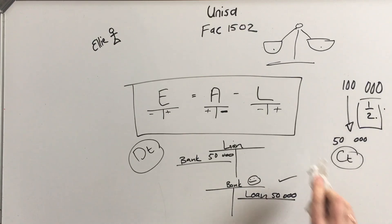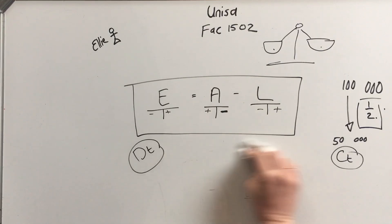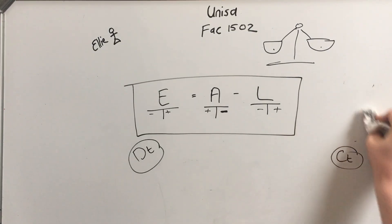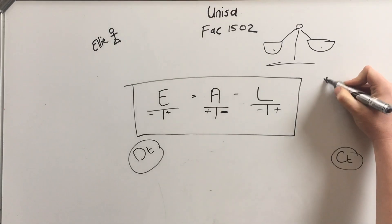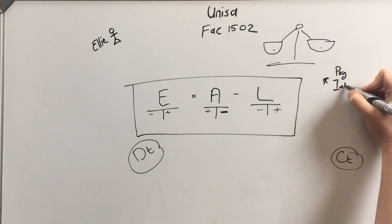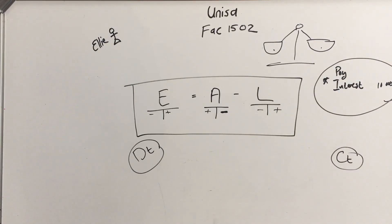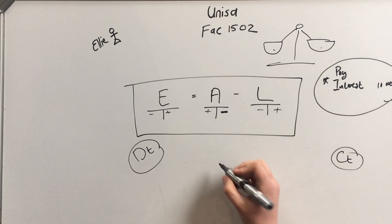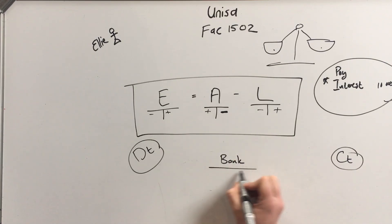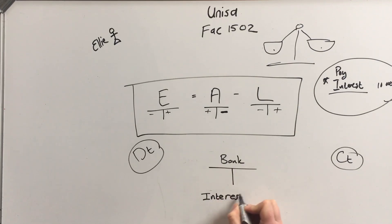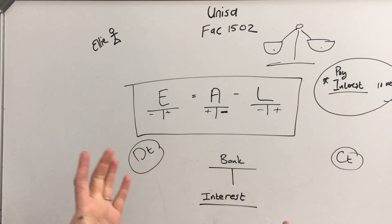That's liabilities. Now let's look at expenses. Expenses are something like interest we need to pay. Let's say I'm going to pay interest of 10,000 Rand. There must be two accounts — one to debit and one to credit. If I pay something, I pay out of my bank account, so bank is my first general ledger account. The second account is interest.